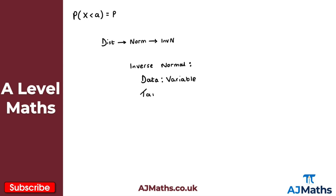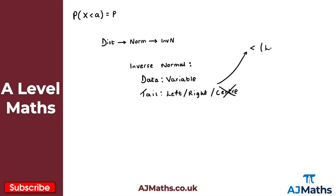Then it will ask for the tail, and this is dependent on the question you're working with. On mine it will ask for one of three things: left, right, or center. Ignore center — we don't need that for any of our questions. Left or right depends on the question. If x is less than a, the inequality is pointing to the left, so the tail is left. If x is greater than, the tail is right because the inequality is pointing to the right. An easy way to remember: just look at which way the inequality is pointing.